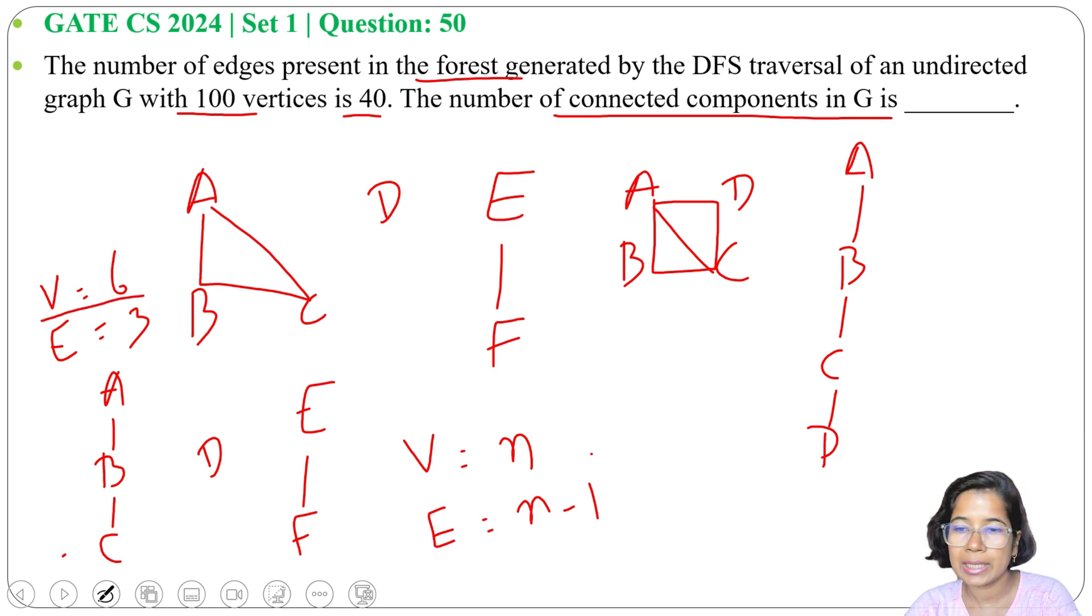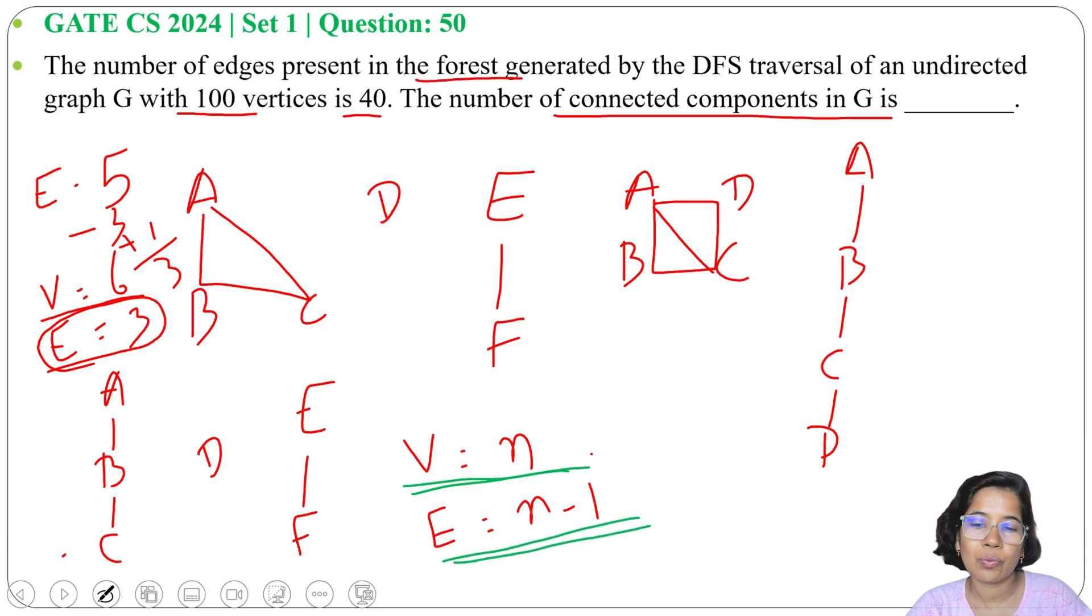So for V equals to 6, number of edges should be 5 if it is a single connected component. As it is a disconnected graph, so here number of edges equals to 3 in the DFS forest. 5 minus 3 plus 1. So there are 3 connected components. So for V equals to n, number of edges should be n minus 1. If we have X edges, then it will be n minus 1 minus X plus 1.